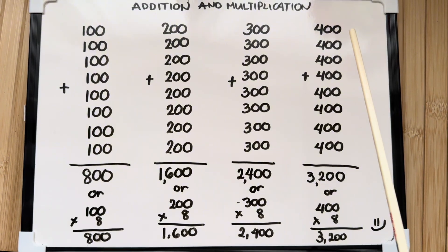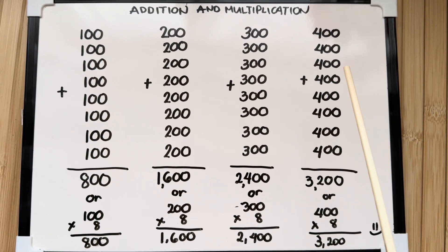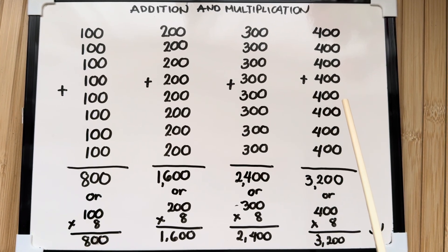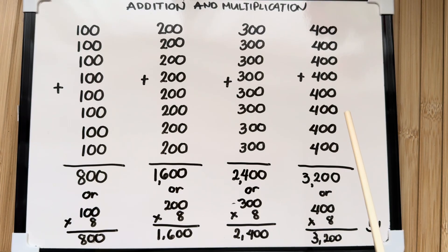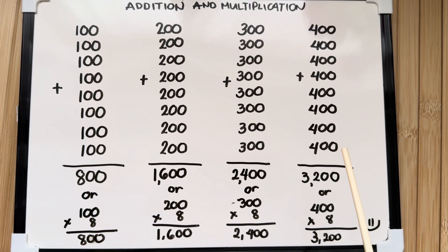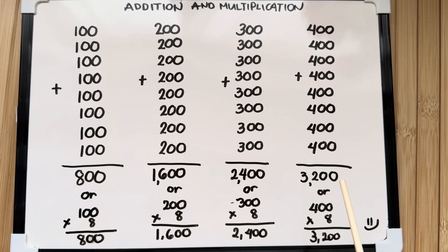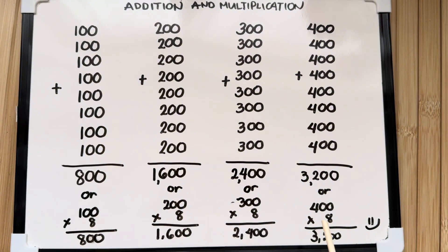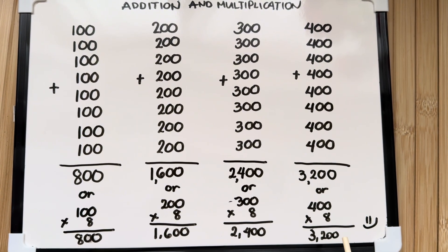And lastly, 400 plus 400 plus 400 plus 400 plus 400 plus 400 plus 400 plus 400 is equals to 3,200. Or 400 times 8 is equals to 3,200.